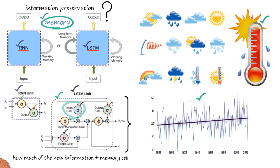The output gate in the LSTM network determines how much of the memory cell information should be used to produce the output at the current timestamp — how much information we should keep to produce something in the current scenario. Using the weather prediction example, the output gate determines how much of the information stored in the memory cell, such as historical temperature trends, should be used — for example, the last 100 years or last 50 years of temperature data.